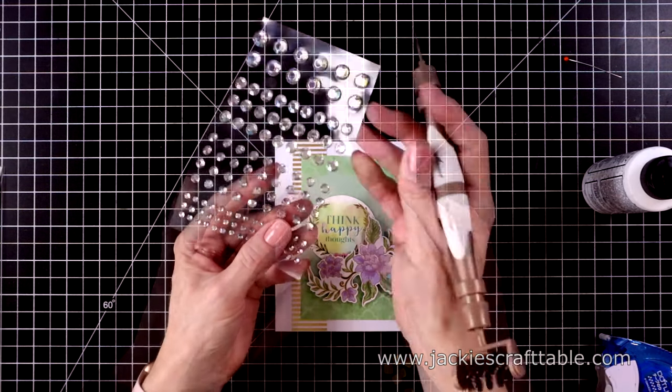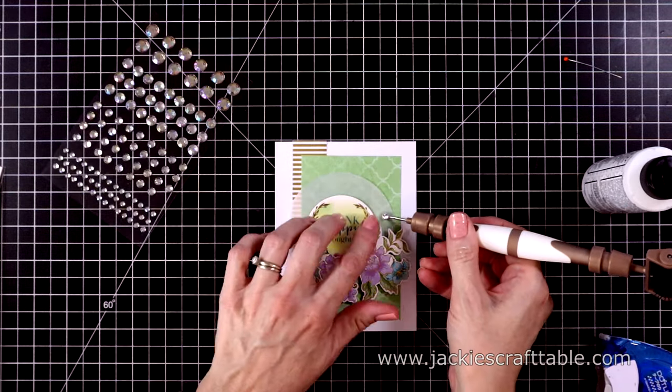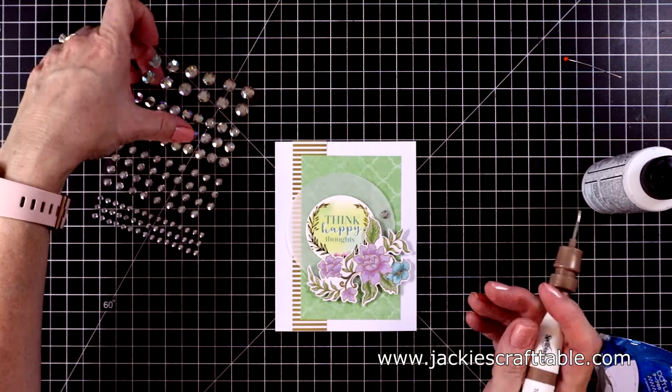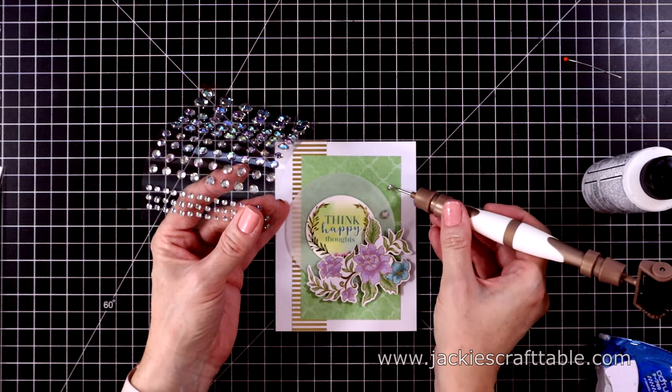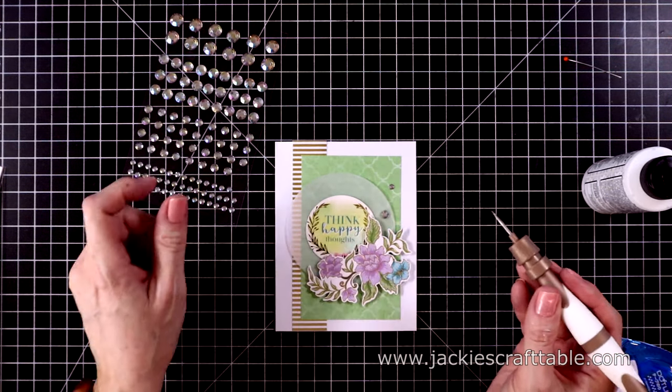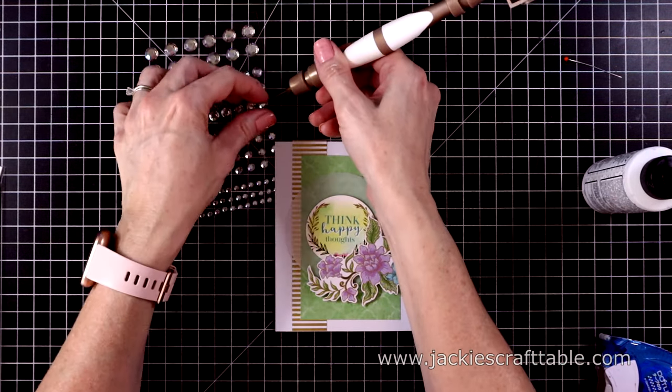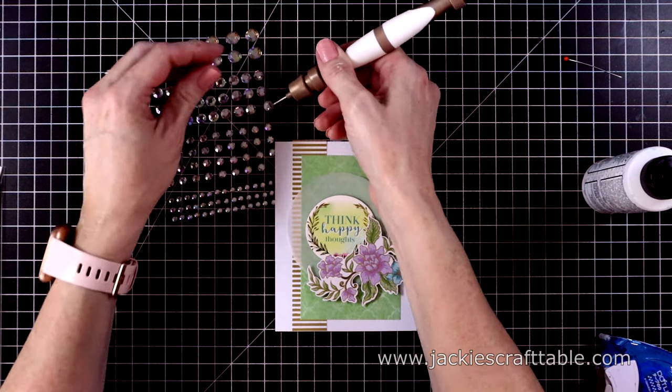I'll pull out some of the gems. And I loved all the different sizes of these. I like to use my all-in-one tool to lift these off the acetate and place them on my card.